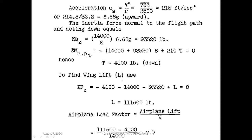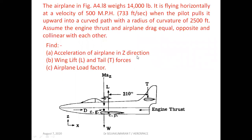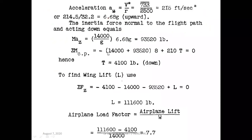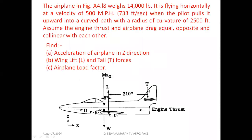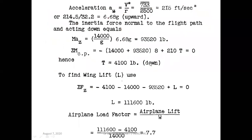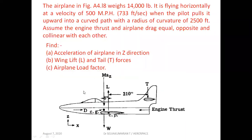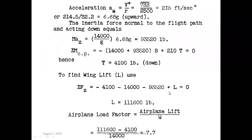Taking the moment about the CP (sigma M_CP = 0): MA_z and W act at the same distance in the same direction (anticlockwise, hence negative) — so minus (MA_z + W) into 8, and T into 210 is clockwise, positive. From this we can find the tail force T. Resolving vertically: minus MA_z plus L minus T minus W equals 0, and from this we can find the wing lift L.